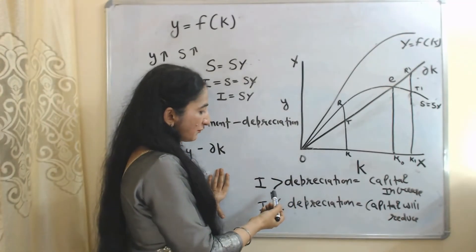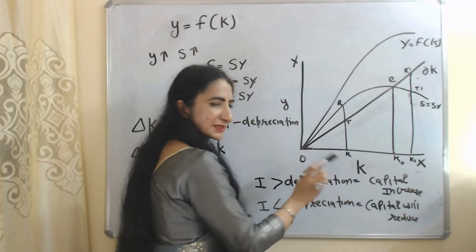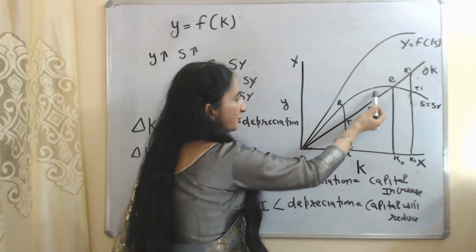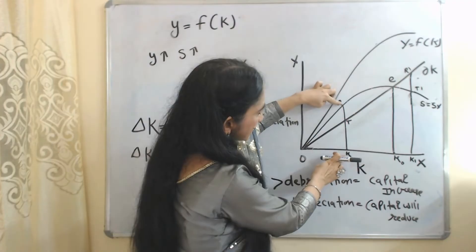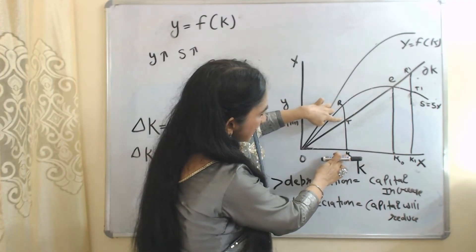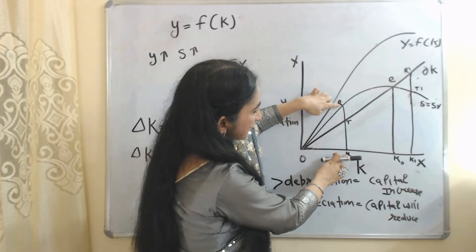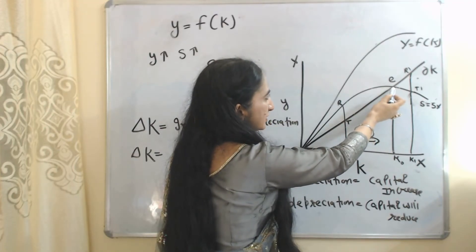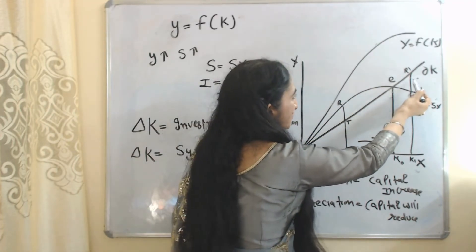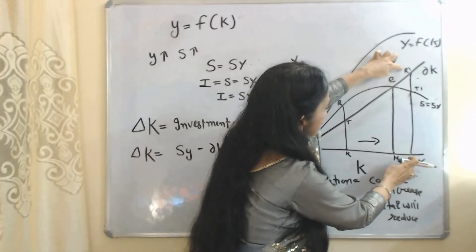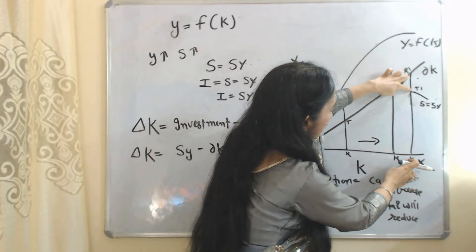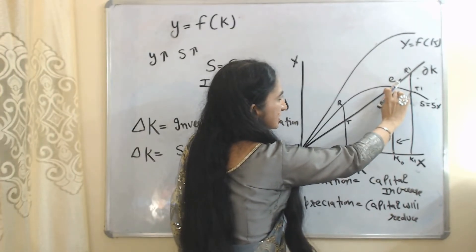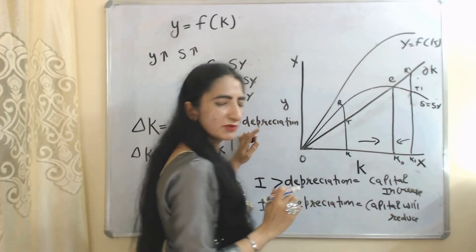At point E, depreciation equals investment, so E is called the steady state equilibrium point. When investment is more than depreciation, capital increases. When investment is less than depreciation, capital reduces. Before point E, investment (rk) is more than depreciation (tk), so capital increases and we eventually reach steady state. After point E, depreciation (r1k1) exceeds investment (t1k1), so capital reduces and we return to steady state.